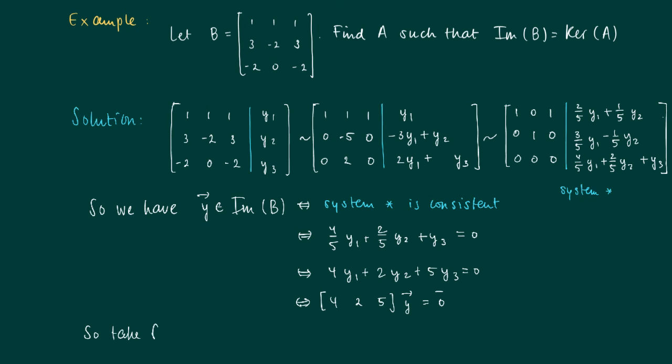So now we have y is in the image of B if and only if y is in the kernel of the matrix [4, 2, 5]. So we can take, for example, A equal to [4, 2, 5].